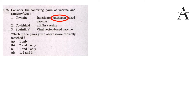How does Covaxin work? It is given as an injection into the muscle of the upper arm. Once injected, it provokes an immune response that can block or kill the virus against future infection or invasion, without actually causing the disease. So this statement about Covaxin is correct.